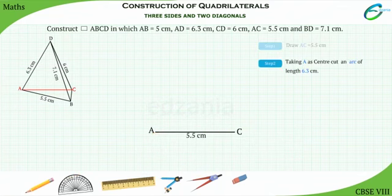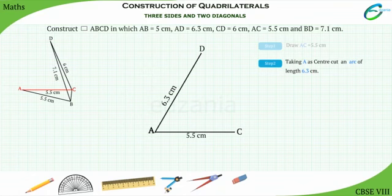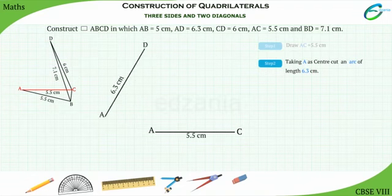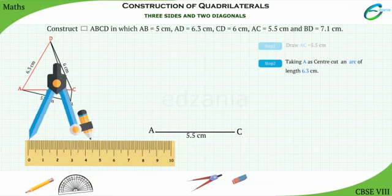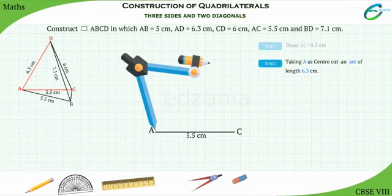Step 2: AD is equal to 6.3 cm. So placing the compass pointer at point A and taking the measurement 6.3 cm, cut an arc.